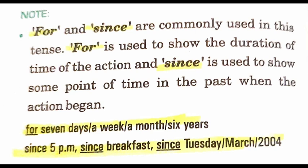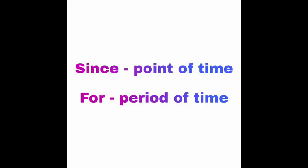'I have not met him since breakfast' — here breakfast is a definite point of time, so we use 'since.' 'We have not talked to each other since Tuesday' — Tuesday is again a point of time. So remember: with a point of time you use 'since,' and with duration you use 'for.'